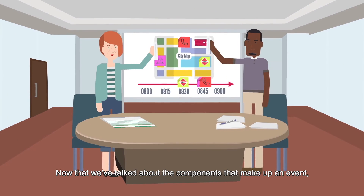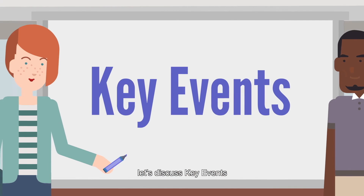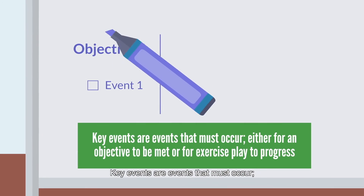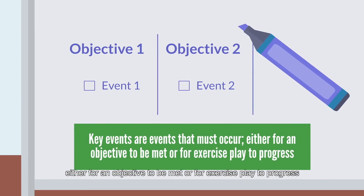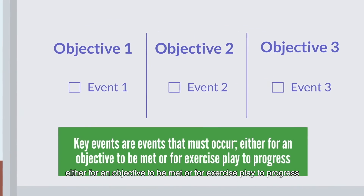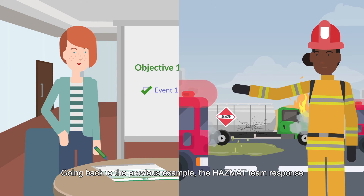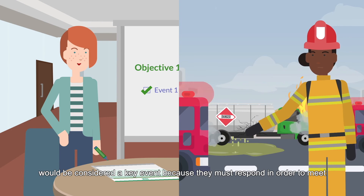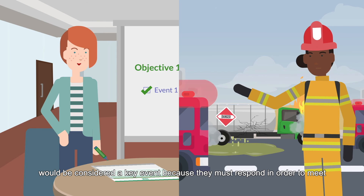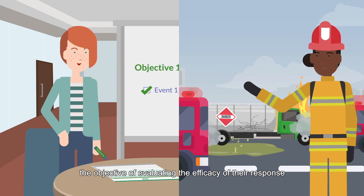Key events are events that must occur, either for an objective to be met or for exercise play to progress. For example, the hazmat team response would be considered a key event because they must respond in order to meet the objective of evaluating the efficacy of their response.